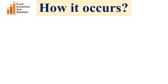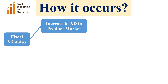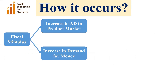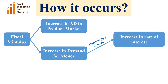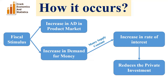Now let's understand how it occurs. Fiscal stimulus leads to a rise in aggregate demand in the product market and demand for money in the money market. We assume that money supply is fixed, and hence the rise in demand for money leads to a rise in the rate of interest. Since there is an inverse relation between the rate of interest and private investment, the rise in the rate of interest reduces private investment in the economy.